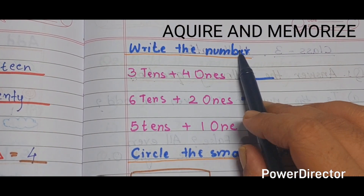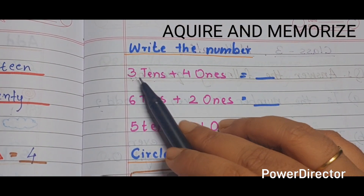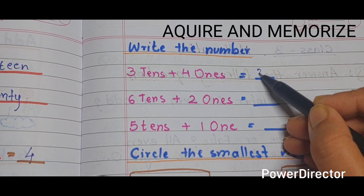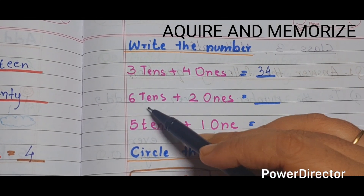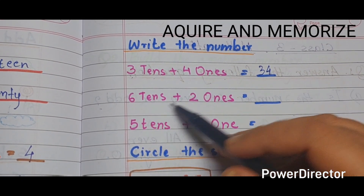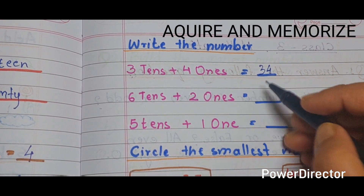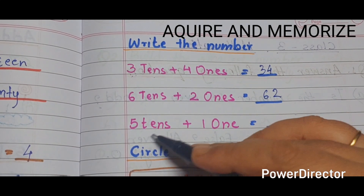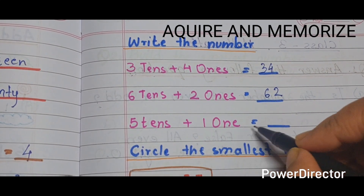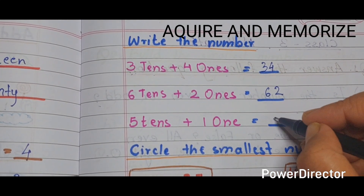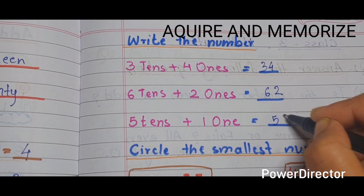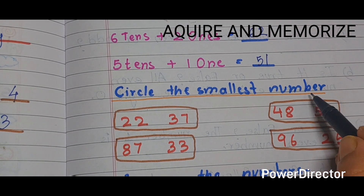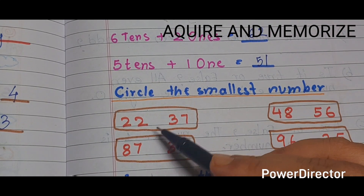Next section is 'write the number' using tens and ones. 3 tens and 4 ones — that is 34. 6 tens and 2 ones — that is 62. 5 tens and 1 one — that is 51.